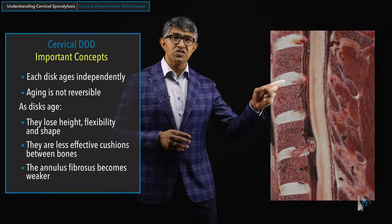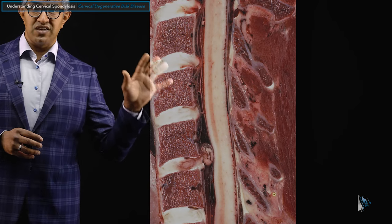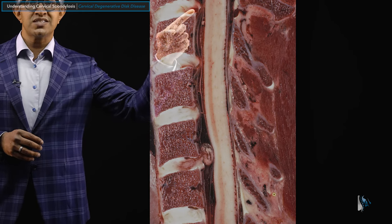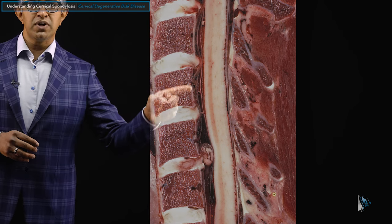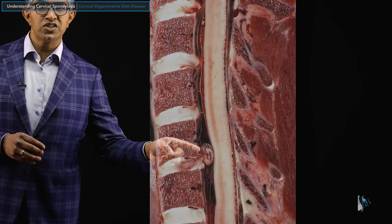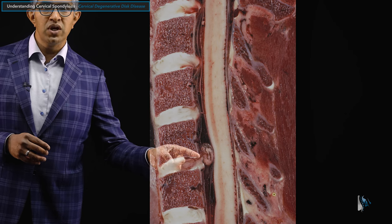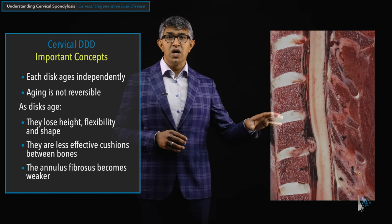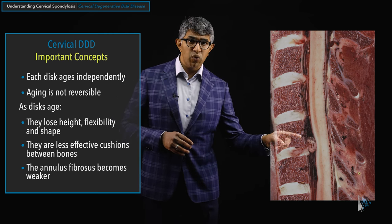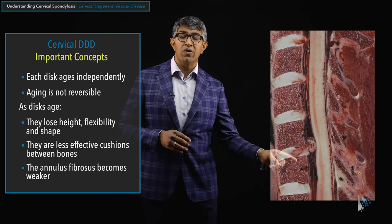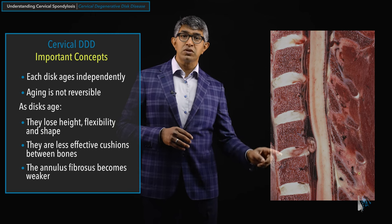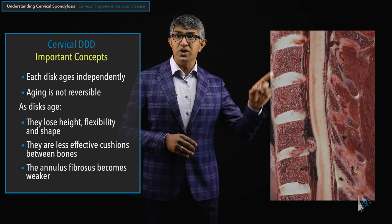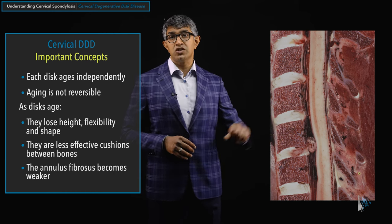A frozen cadaver section does a really nice job showing this. You can see a disc that looks okay but has a tear, with a little bulge here and there, and then a frank herniation where some of the nucleus has come through a hole in the annulus — in this case causing pressure on the spinal cord. Notice all the discs look a bit different; in this case there's not a lot of degeneration, but the annulus fibrosis has gotten weak at a number of levels.